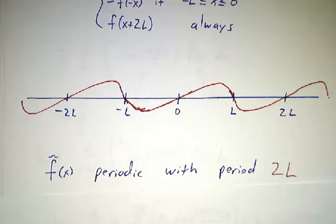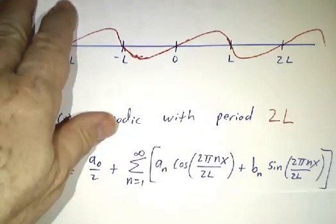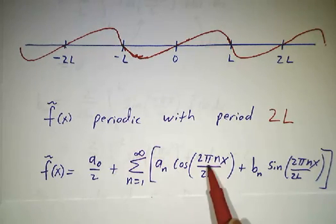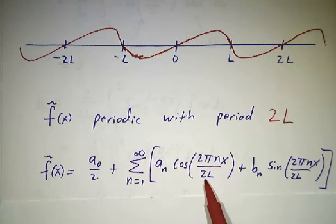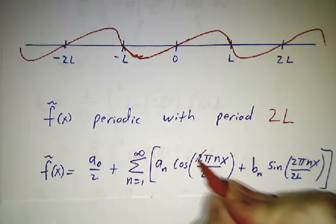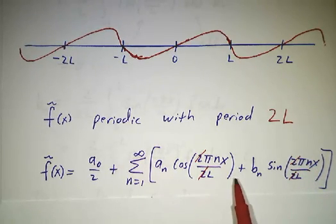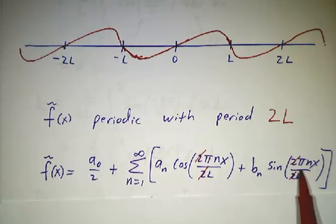Now we've got ourselves a periodic function, but it's not periodic with period L. It's periodic with period 2L. What's happening at negative 2L and at 0 and at 2L is the same. We've got our new periodic function and we know how to decompose periodic functions. We can write a periodic function as a constant plus a sum of cosines and sines. The cosines and sines involve multiples of 2πx over the period. But in this case, the period is 2L. So the 2 from the 2π and the 2 from the 2L actually cancel, and we wind up with cosines and sines of nπx/L.